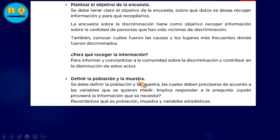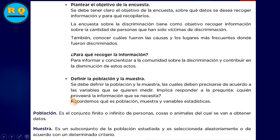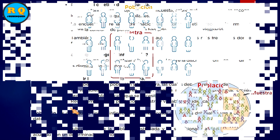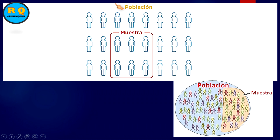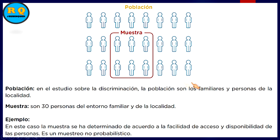Definir la población y la muestra. Ya habíamos visto que la población es un conjunto bien grande, puede ser finito o infinito. La muestra es parte de ese conjunto, un subconjunto. En este caso, la población va a ser familias y personas cercanas a tu localidad, y la muestra va a ser 30 personas de ese entorno.